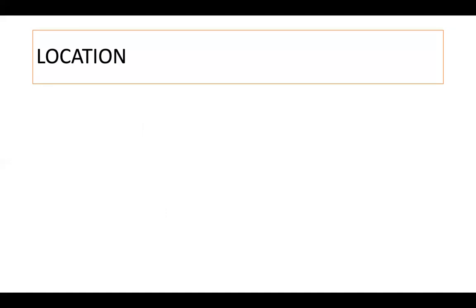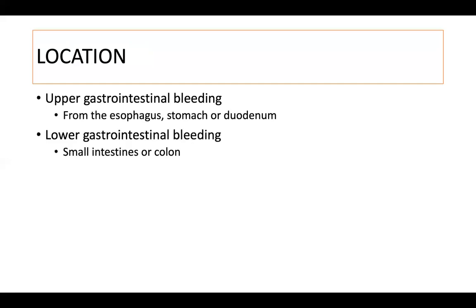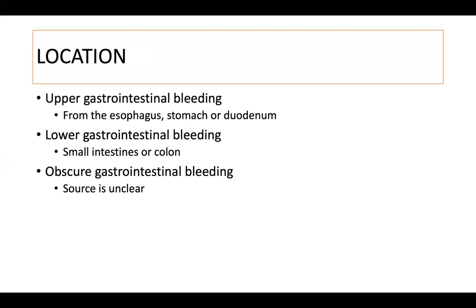In discussing GI bleeding, the location is also vital in deciding how to proceed with diagnosis and management. Upper gastrointestinal bleeding is bleeding that comes from the esophagus, stomach, or duodenum. Lower gastrointestinal bleeding is bleeding that comes from the small intestine or colon. Obscure GI bleeding is when the source of bleeding is unclear.